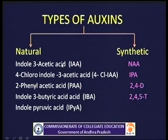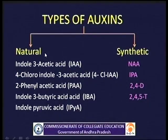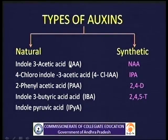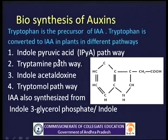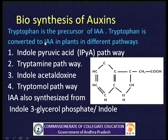Types of auxins: Auxins are of two types — natural auxins and synthetic auxins. Of all the auxins, indole-3-acetic acid (IAA) is the most prevalent native auxin present in plants. Synthetic auxins are commercially synthesized and used in horticulture and agriculture. The biosynthesis of auxins: IAA is synthesized from tryptophan, which is an aromatic amino acid.